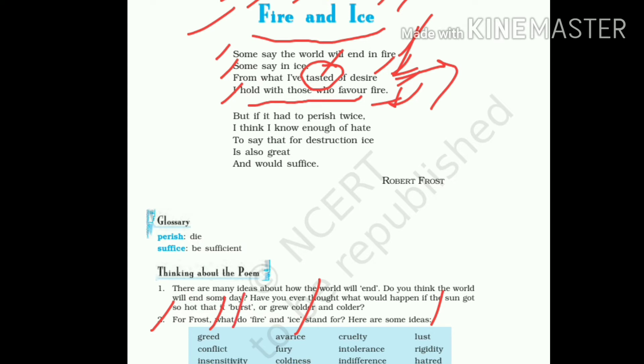Let me tell you, fire means it is not literally fire, but it is desire. Desire of greed, desire of avarice - avarice means it is also greed. Desire of lust is there, desire of conflict is there. So here there are many things that in the form of desire would end the world.